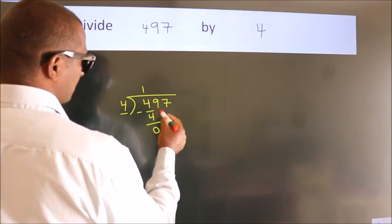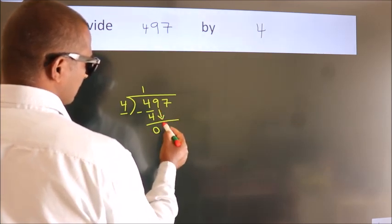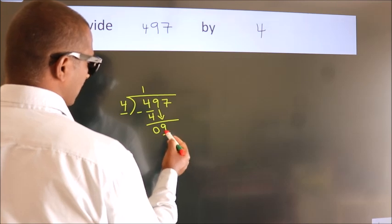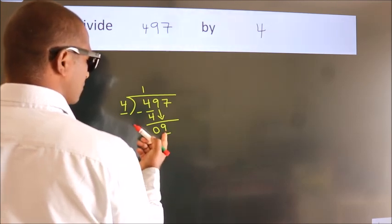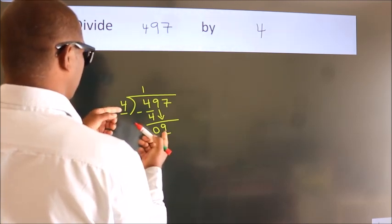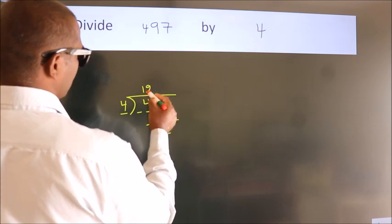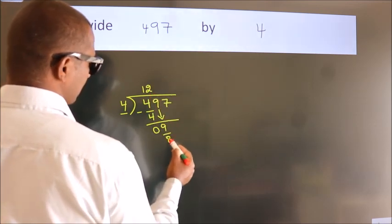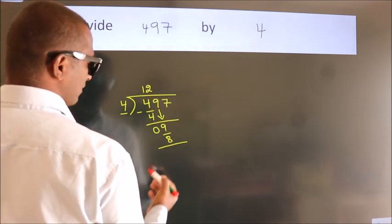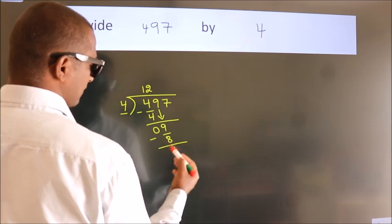After this, bring down the beside number. So 9 down. So 9. A number close to 9 in 4 table is 4 2s 8. Now we subtract. We get 1.